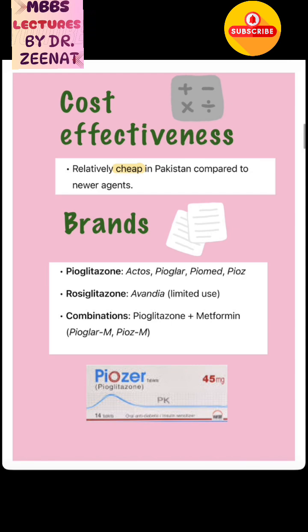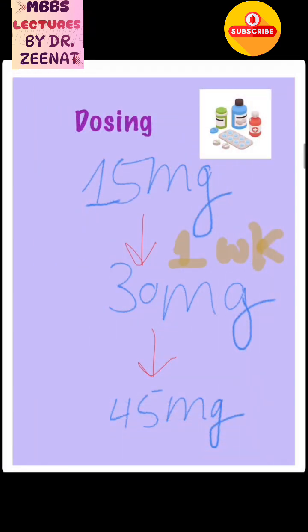They are cheap and easily available. Brands include Piozer, which is very famous in Pakistan, as well as Actos, PioGlar, and PioZivendia. Regarding dosing: we start with 15 mg, after one week we can increase to 30 mg, then to 45 mg. This covers the anti-diabetic drug group — thiazolidinediones.